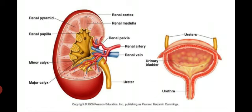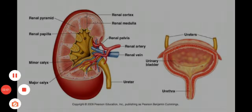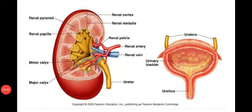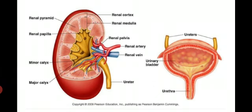The base of each pyramid faces the renal cortex while its tip is in the cavity called the renal pelvis. The pelvis extends to the outside of the kidney and forms the ureters. You are watching the renal artery in red color, which joins the renal pelvis for supplying oxygenated blood, and the renal vein in blue color, which leaves the pelvis of the kidney carrying deoxygenated blood, along with the ureter also leaving the kidney at the pelvis region.